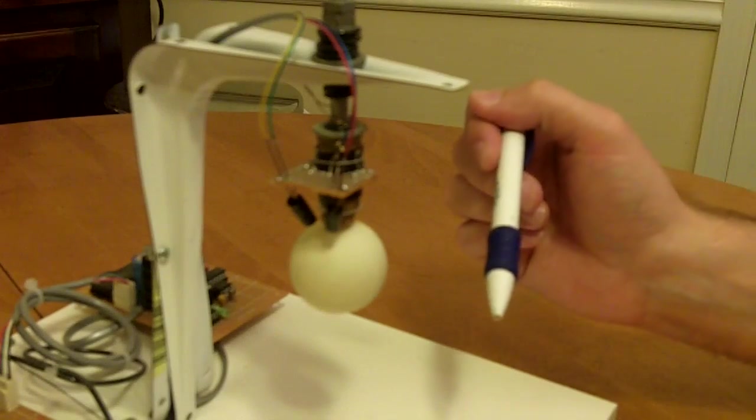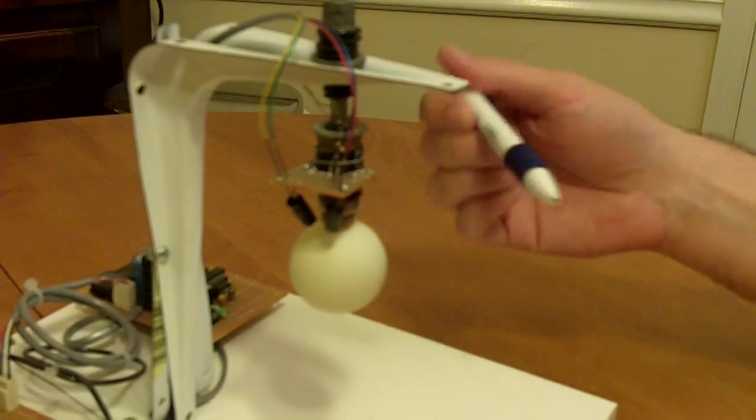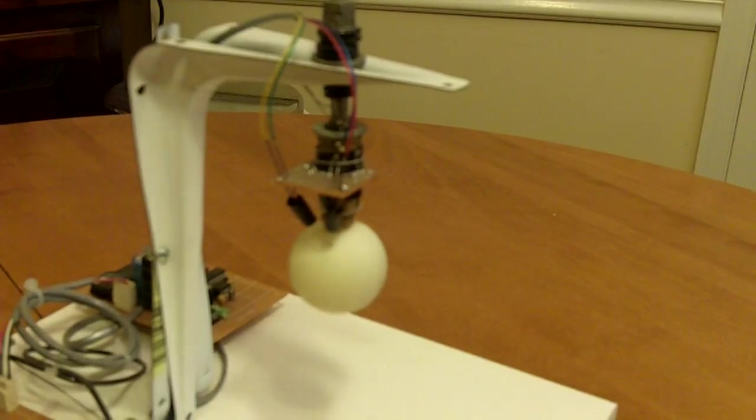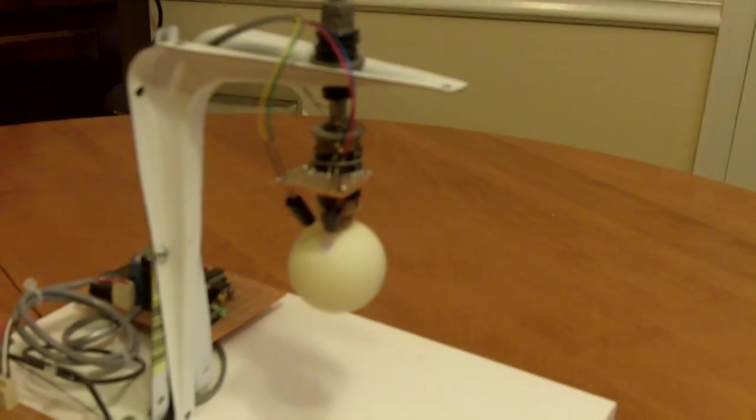So the microprocessor can constantly monitor how far away the ping-pong ball is, and actually about 500 times a second it will adjust the power in the magnet accordingly. So let me turn it on and I can show you how it works.